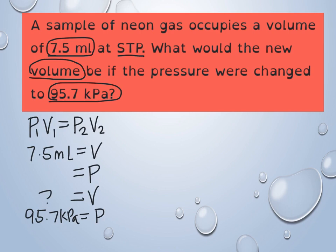STP — standard temperature and pressure — can stand for 1 atm, 101.3 kPa, or 760 millimeters of mercury. In this case, the most reasonable value to use is 101.3 kPa because it's the same unit as the pressure given. Temperature is not mentioned, so we assume it's constant — and there is no temperature variable in this gas law. So our initial numbers are V1 = 7.5 mL and P1 = 101.3 kPa. We're finding the new volume at P2 = 95.7 kPa.